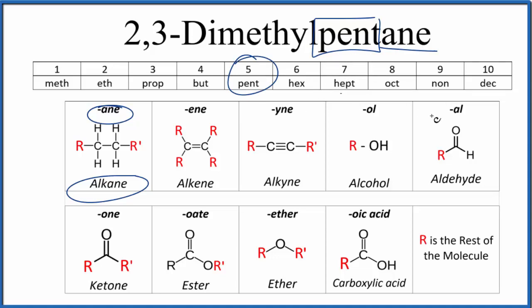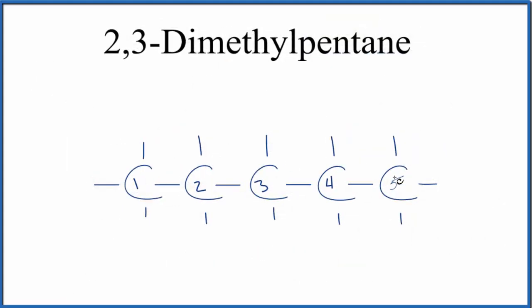Let's put five carbon atoms up and number them one through five. These lines here go to hydrogens. Each carbon is bonded to four things.